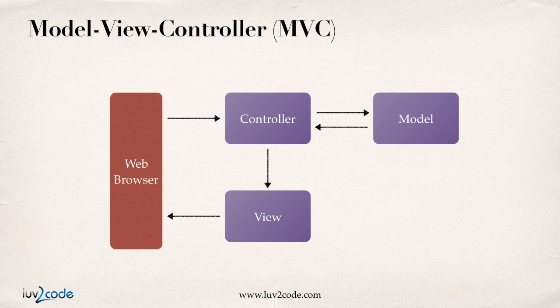Here's a nice diagram of the model view controller. With MVC, you take key functionality of the application and break it up into smaller components. A web browser user will hit a link or submit some form data — it comes into the controller. The purpose of the controller is to figure out which piece of code needs to execute based on the web request. It may route to submitting form data, querying a database, or sending an email. The controller acts like a traffic cop, determining what piece of code needs to execute for a given web request.